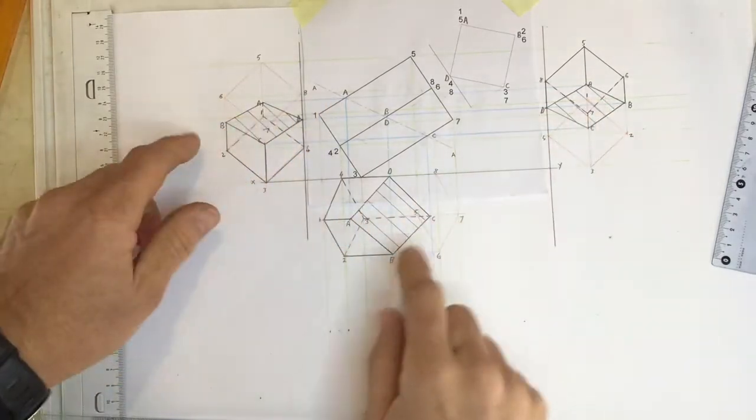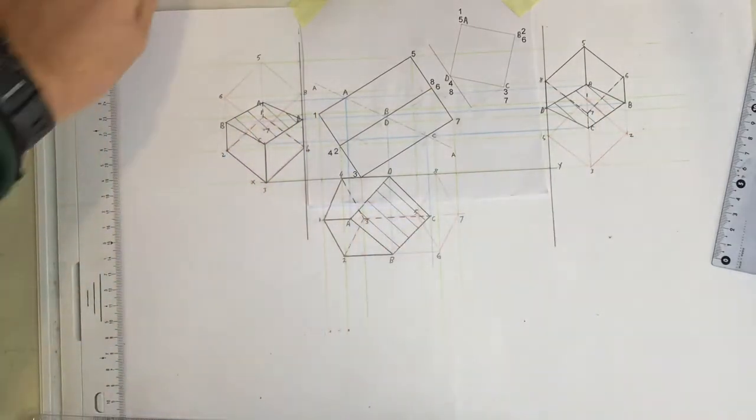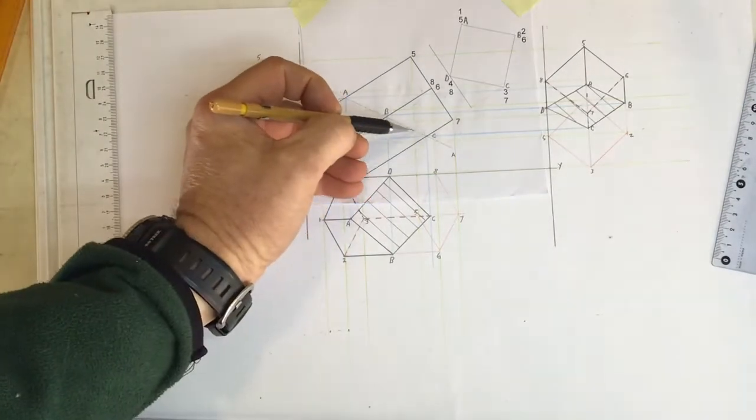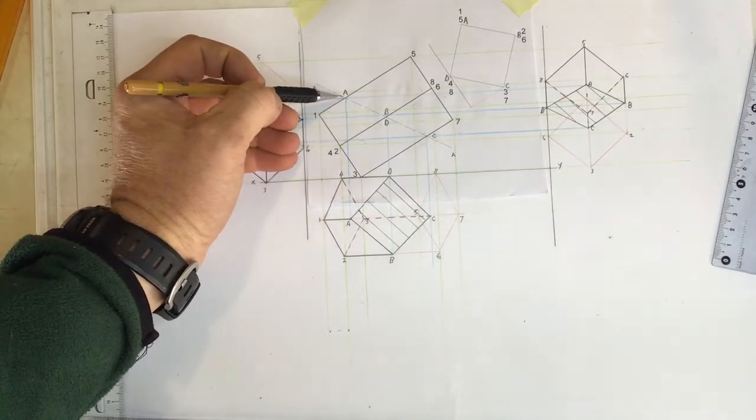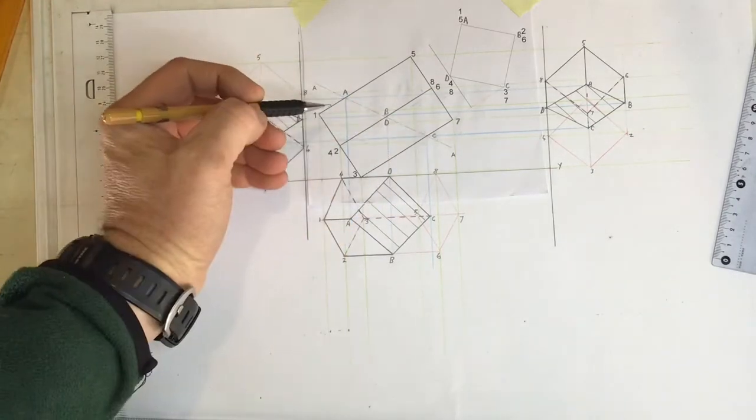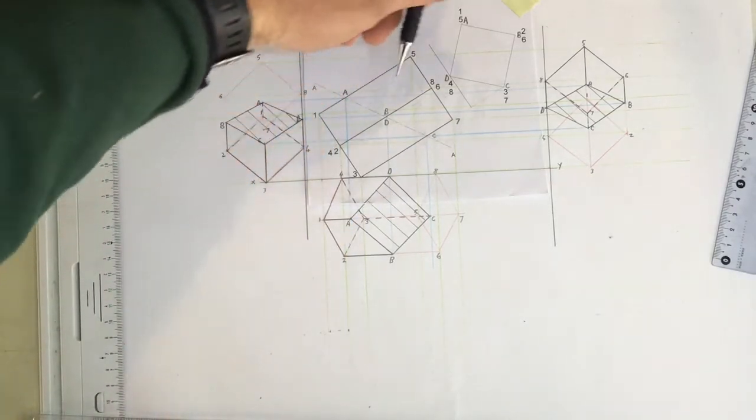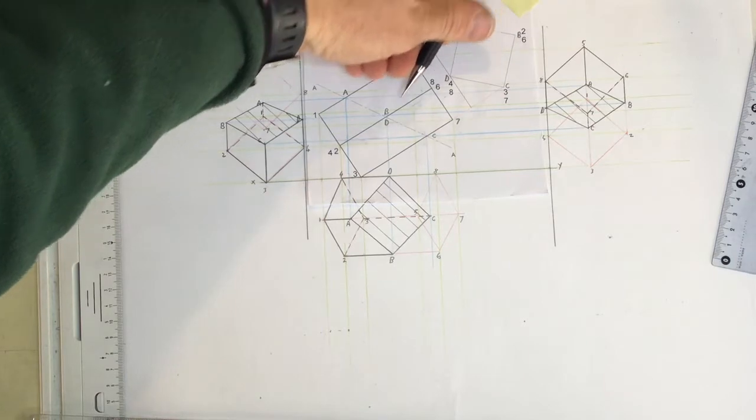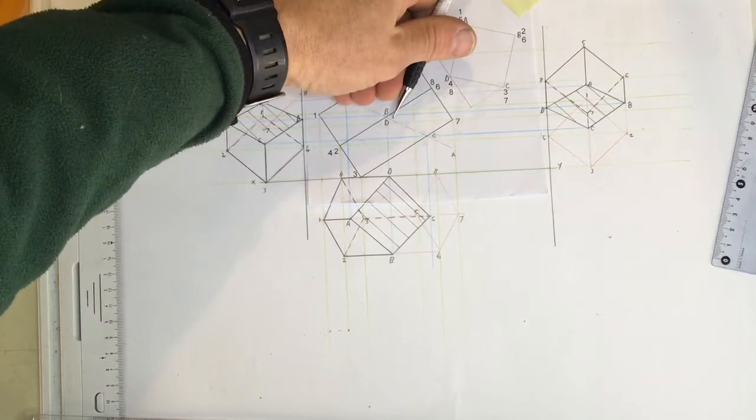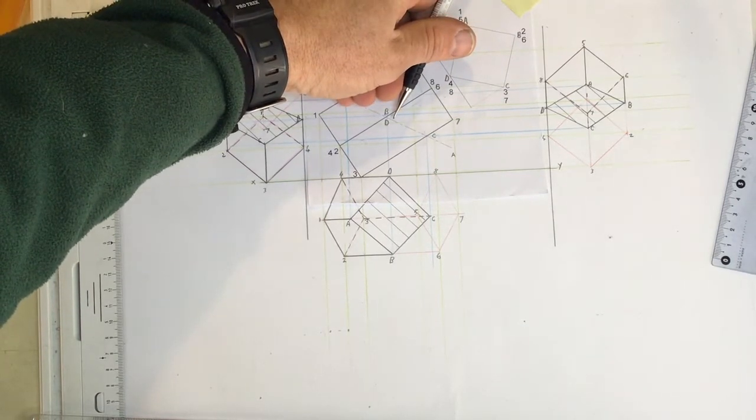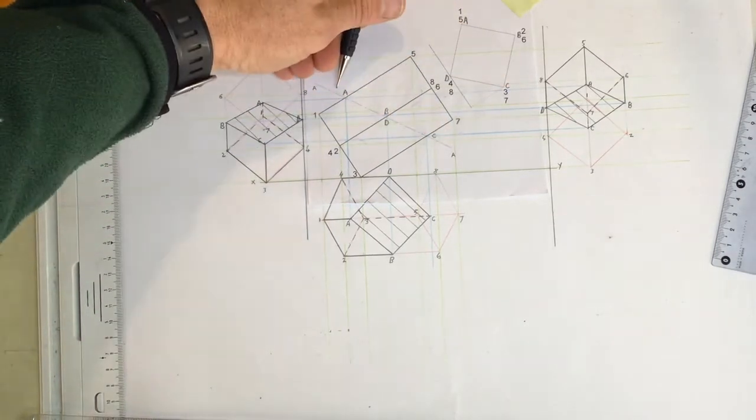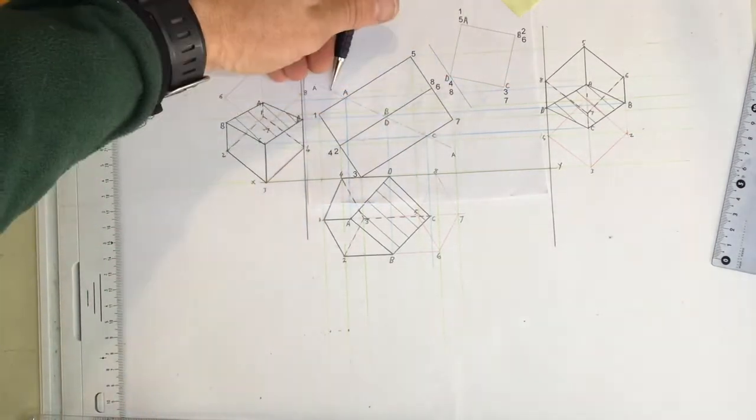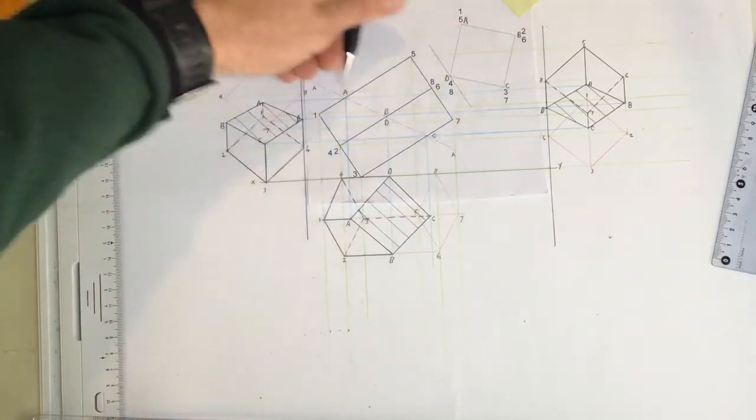None of these views is showing a true shape of the cutting plane. Reason being is that that line going through there is not parallel to the xy axis. I need to look at 90 degrees to that cutting plane, which means that I need to draw an xy axis which is going to be parallel to that cutting plane.